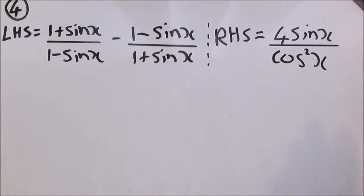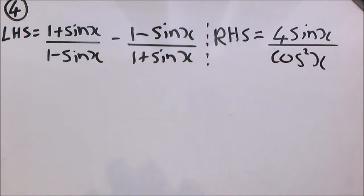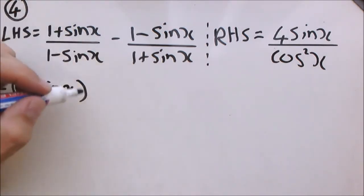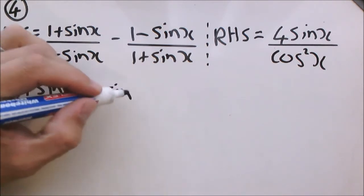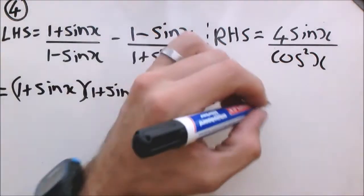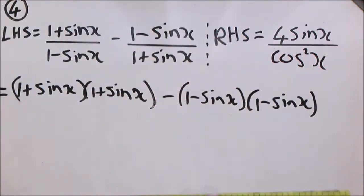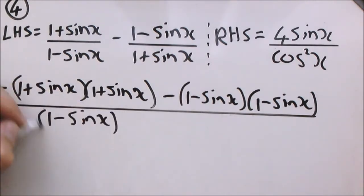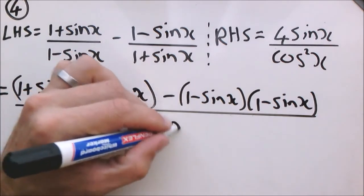If we look at the right hand side, you can see there is only a single fraction there. On the left hand side we have got two fractions. So it is logical to assume that we are going to have to work towards a single fraction. We are going to get the lowest common denominator. This will become 1 plus sin x times 1 plus sin x, minus bracket 1 minus sin x times 1 minus sin x. The common denominator will be 1 minus sin x in a bracket, times 1 plus sin x.